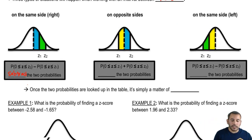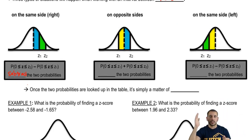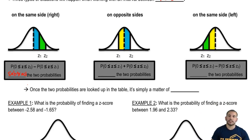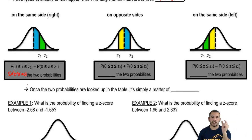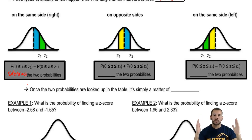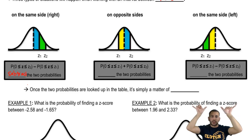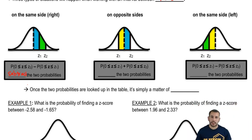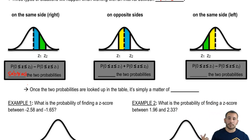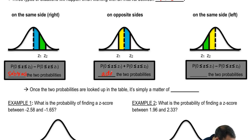Now what about the probability if they're on opposite sides? So z1's on the left, z2's on the right. What we do for that one is not a difference at all, because we're trying to find an area that's in between both, but they're on opposite sides. Since our table provides us zero to z2, and also zero to z1, and it's always from zero to any z-score, what we do is just add them together. So the probability from zero to z1 plus the probability from zero to z2 gives us our answer — all you do is add the probabilities.